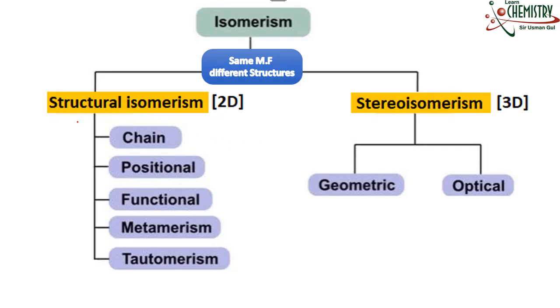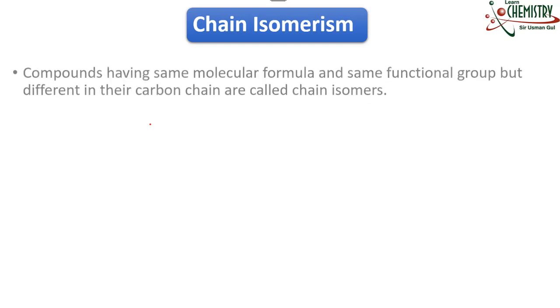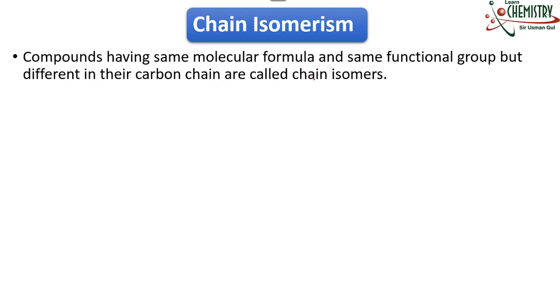Moving forward toward structural isomerism, first I will talk about chain isomerism. Now what is chain isomerism? The definition: compounds having the same molecular formula and same functional group but different in their carbon chain are called chain isomers. When we have a different arrangement of carbon inside the molecule, the isomerism that arises is termed chain isomerism.